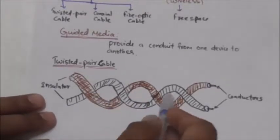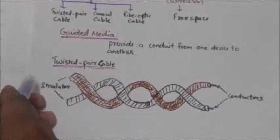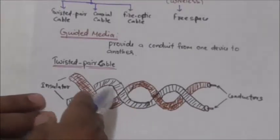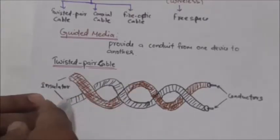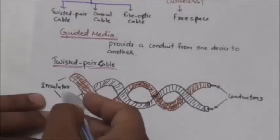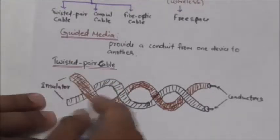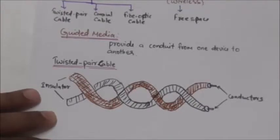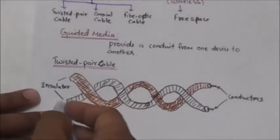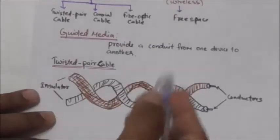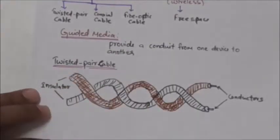As you can see in this figure, a twisted pair cable consists of two conductors, normally copper, each with its own plastic insulation, and these two are twisted together. One of the wires is used to carry signals to the receiver and the other is used only as a ground reference. The receiver uses the difference between the two. In addition to the signals sent by the sender on one of the wires, interference — that is, noise and crosstalk — may affect both wires and create unwanted signals.